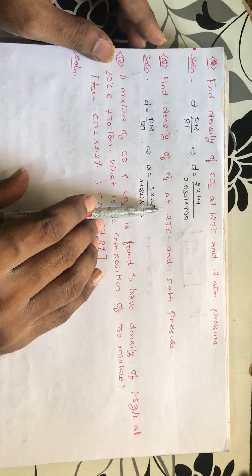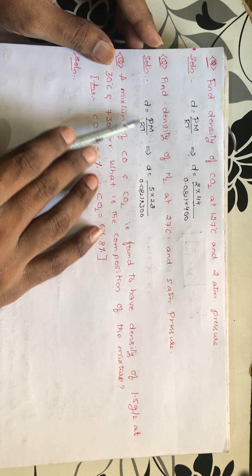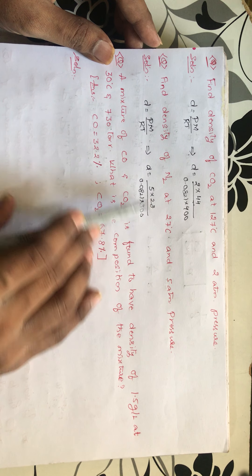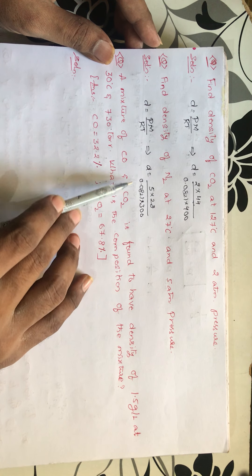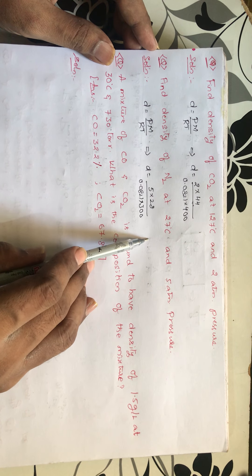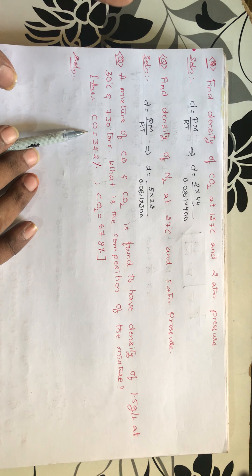Find density of N2 at 27 degrees centigrade and 5 atmospheric pressure. So D equals PM by RT. It implies you are taking pressure as 5 atmospheres. And N2 is 28. 0.0821 into 300. So if you solve this, you will be getting the answer. Solve me the answer and tell me students.